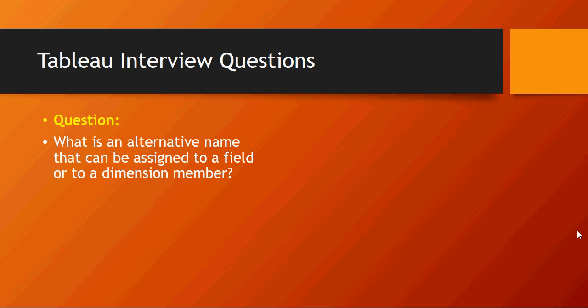What is an alternative name that can be assigned to a field or to a dimension member? Any guesses? It's called an alias.